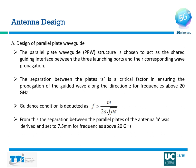The paraplate waveguide structure is chosen to act as the shared guiding interface between the three launching ports and their corresponding wave propagation. The separation between the plates, denoted by the small letter A, is a critical factor in ensuring propagation of the guided wave for all frequencies above 20 GHz. The guidance condition depends on the index m (1, 2, 3, …) and inversely on the separation between the plates. From this, the separation A was derived and set to 7.5 mm for frequencies above 20 GHz.